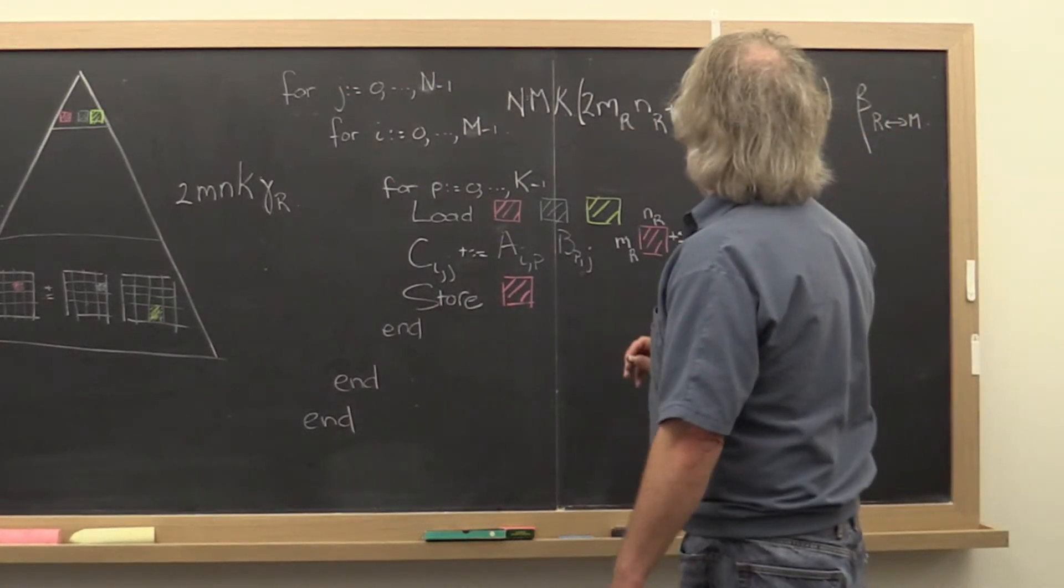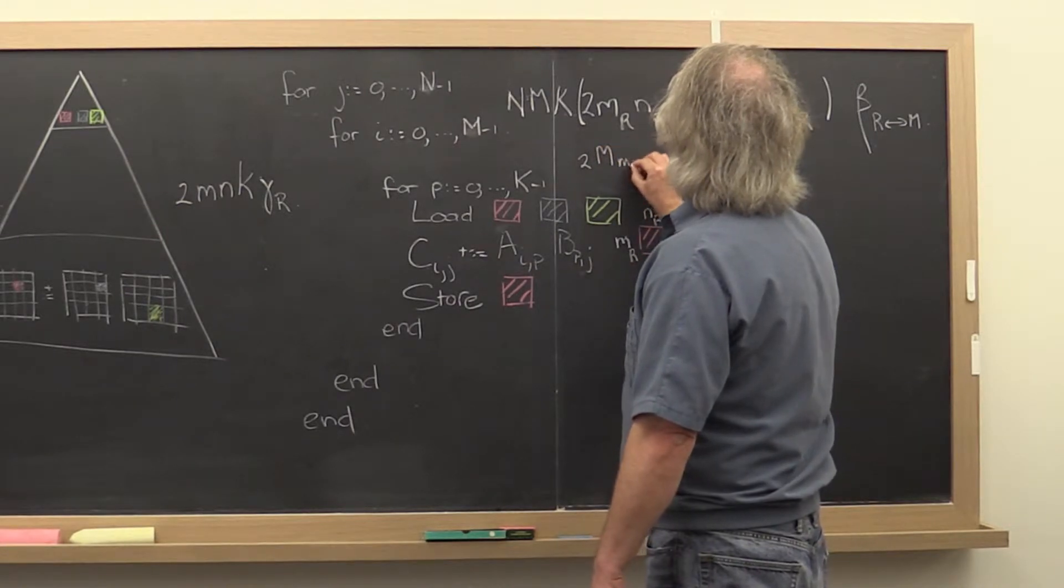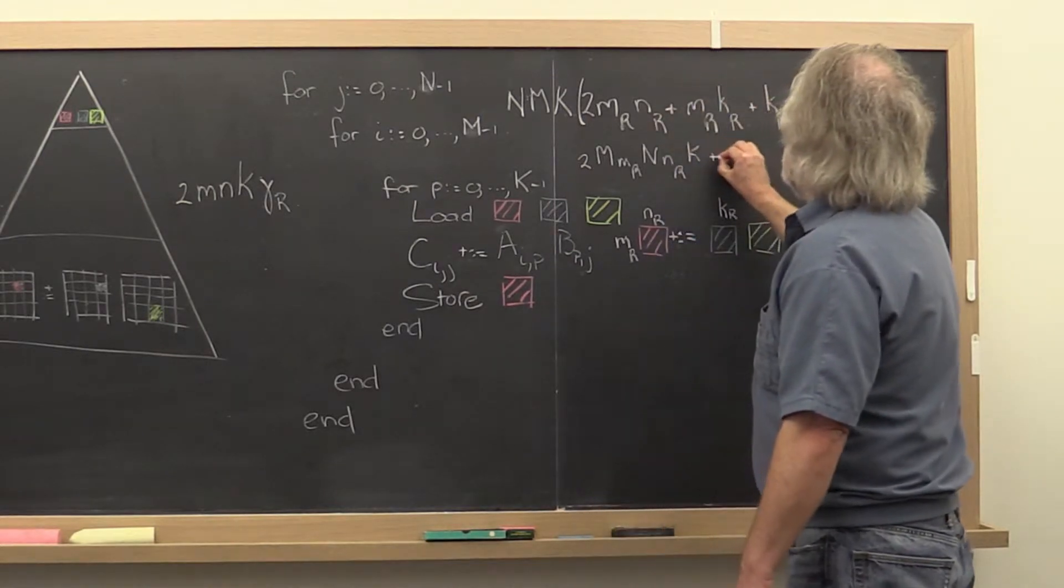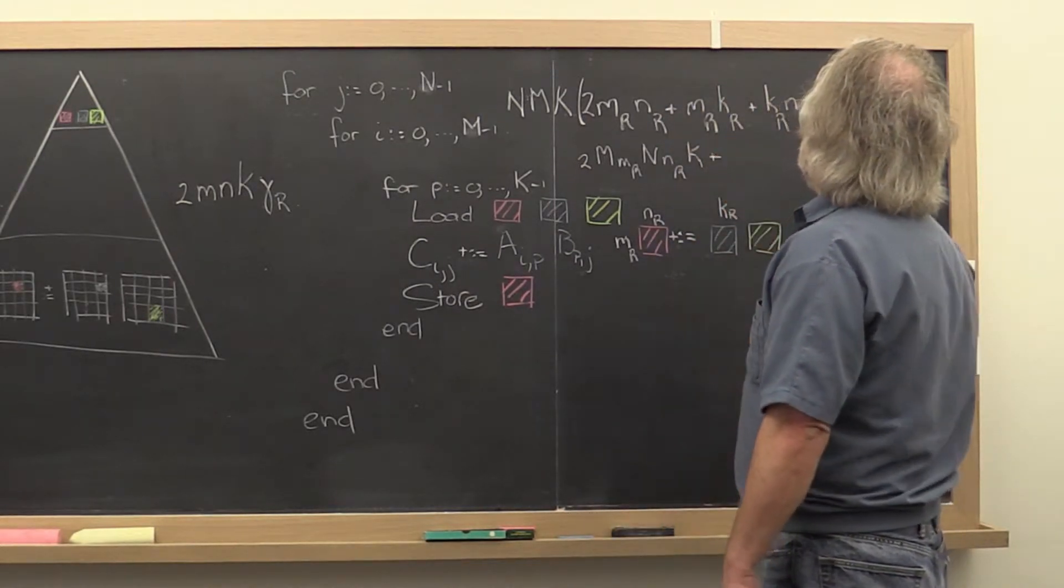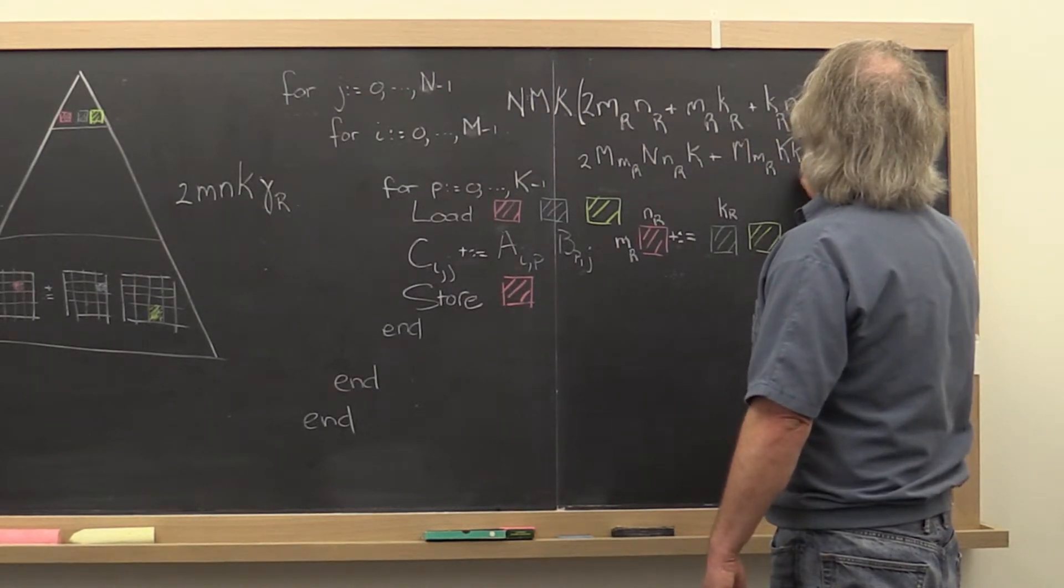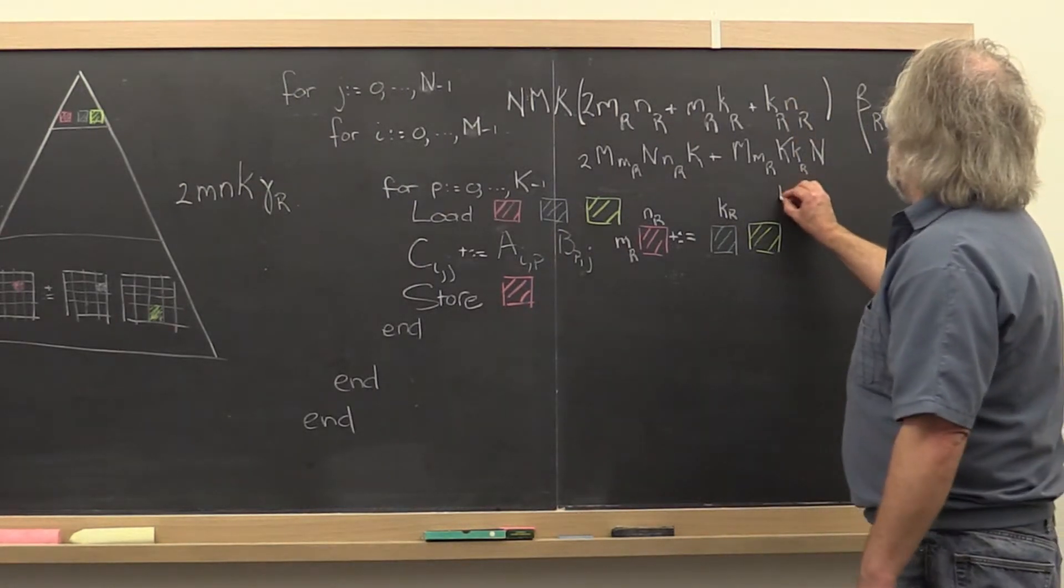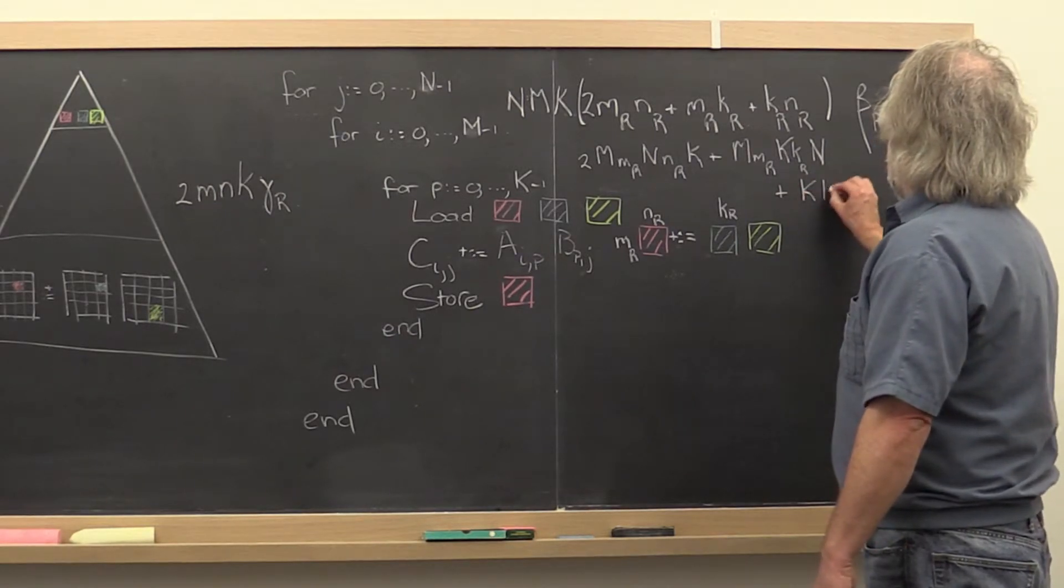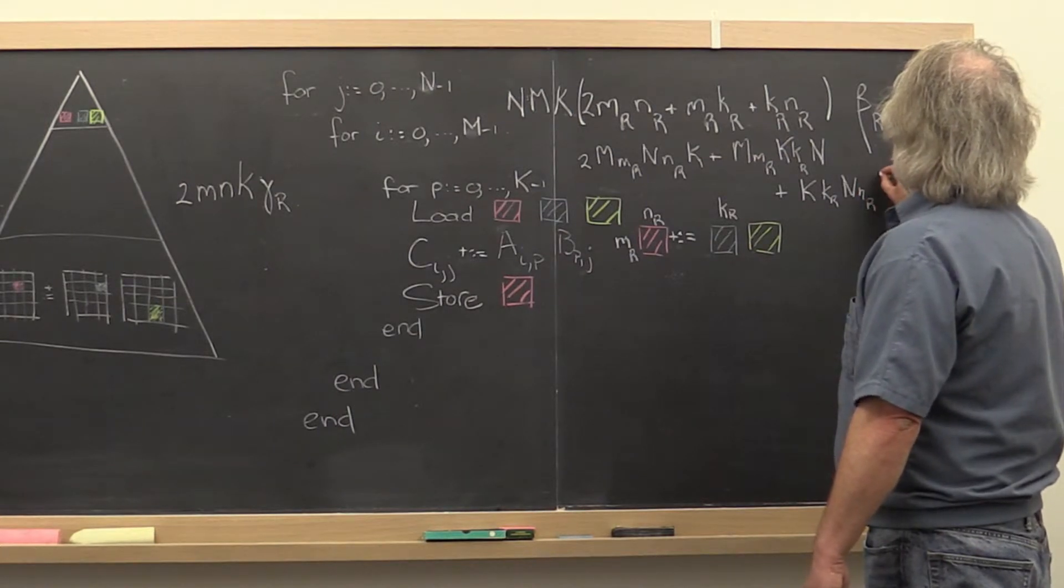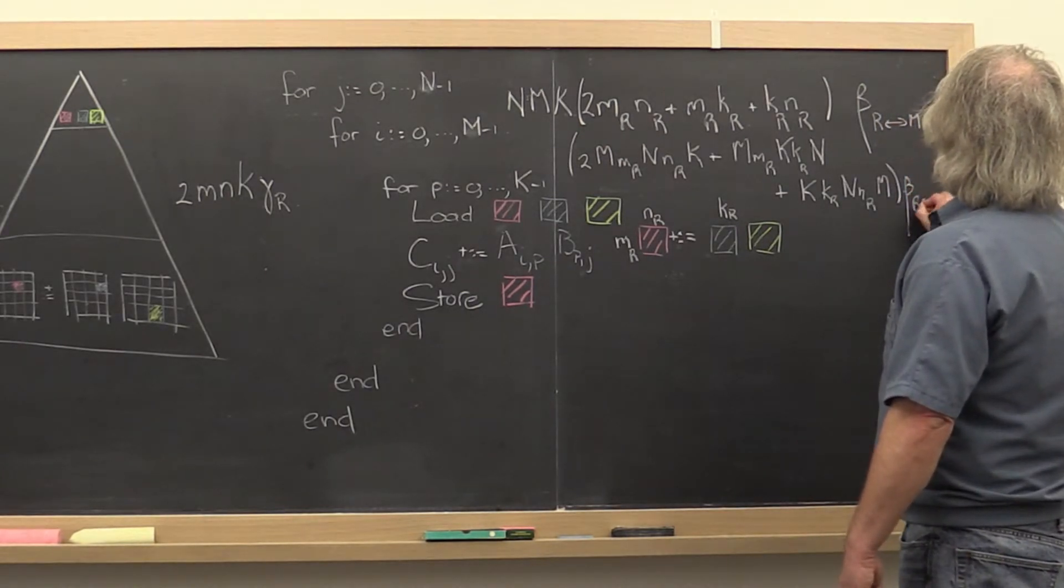Well, we can write this as 2 times m times mr times n times nr times K plus capital K plus m times mr times k times kr times n plus k times kr times n times nr times m quantity times beta rm.